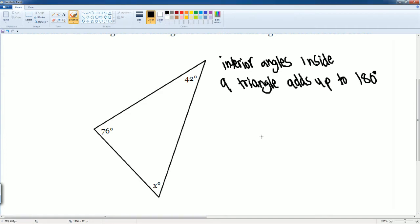Here it is: 42 degrees plus 76 degrees plus X equals 180 degrees. We can combine some like terms. The 42 plus 76 gets us 118, bring everything else down, so plus X equals 180.